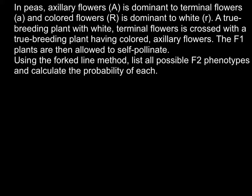Here is the problem: in peas, axillary flowers (capital A) is dominant to terminal flowers (small a), and colored flowers (capital R) is dominant to white (small r). A true breeding plant with white terminal flowers is crossed with a true breeding plant having colored axillary flowers. The F1 plants are then allowed to self-pollinate. Using the forked line method, list all possible F2 phenotypes and calculate the probability of each.